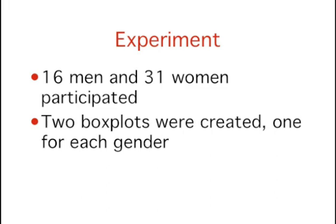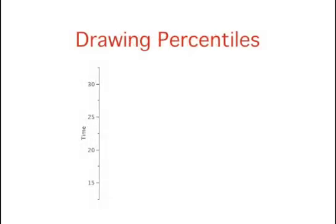We'll compare the scores for the 16 men and 31 women who participated in the experiment by making separate box plots for each gender. Such a display is said to involve parallel box plots. There are several steps in constructing a box plot. First, we draw the y-axis.